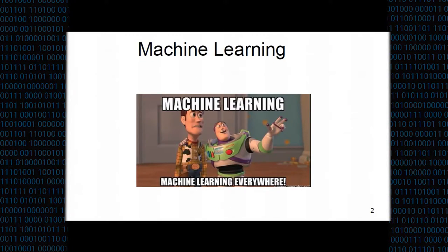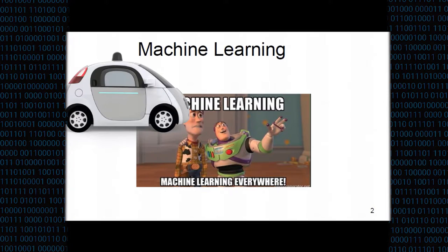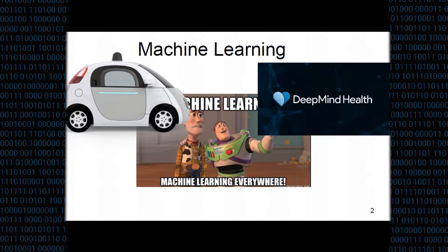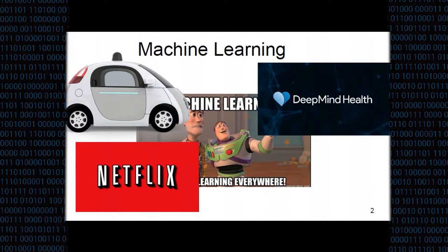Anyway, we all know that machine learning nowadays is having a lot of applications in many areas of everyday life. For instance, it's been applied to self-driving cars or even in healthcare, in the fight against cancer. The recommendation system is another area where machine learning is finding a lot of applications.